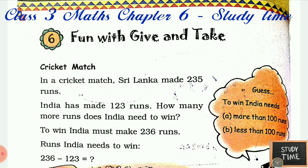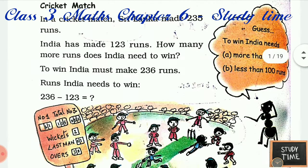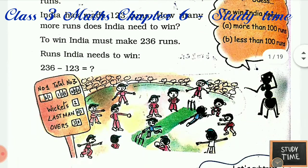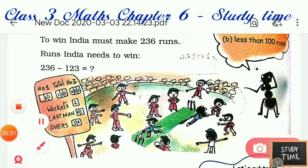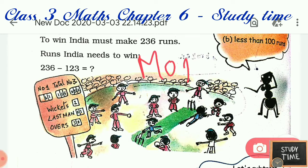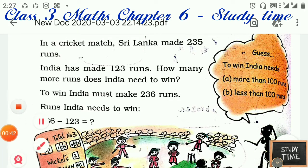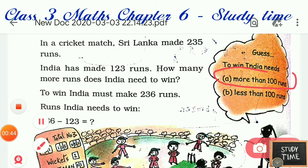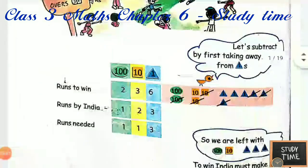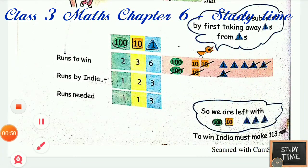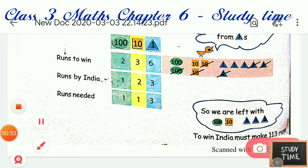How many more runs does India need to win? To win, India must make 236 runs, so you have to subtract 236 minus 123. First, guess: does India need more than 100 runs or less than 100 runs? We can easily guess it is more than 100 runs, because 123 plus 100 is 223, so the answer would be more than 100 runs.